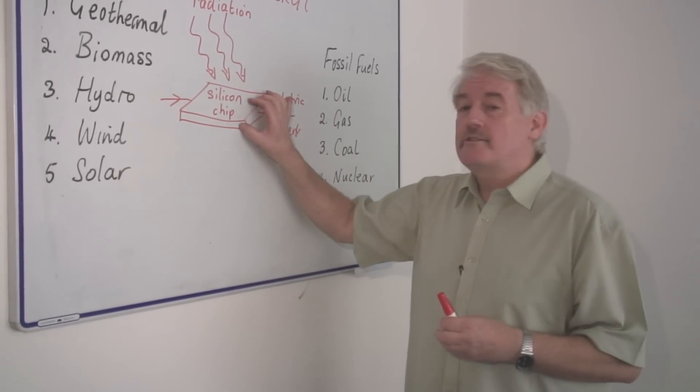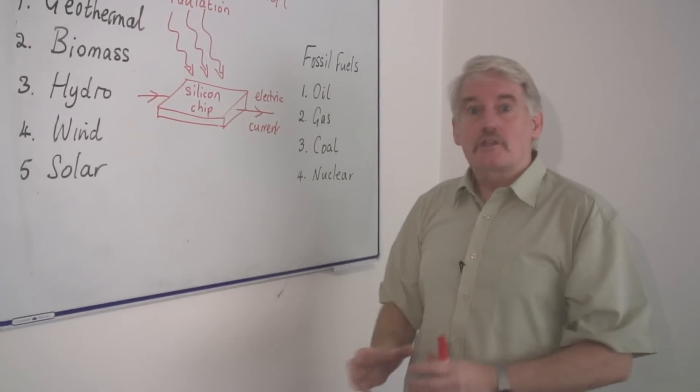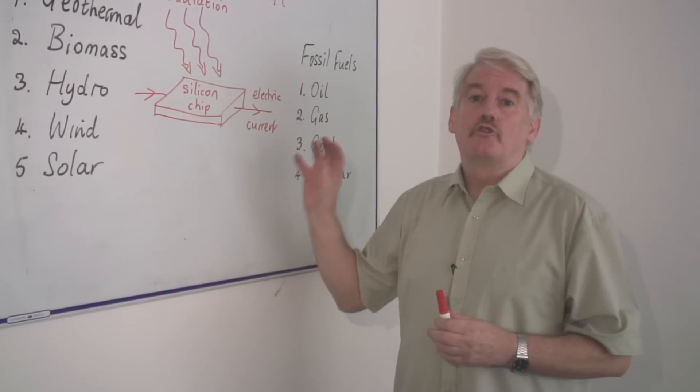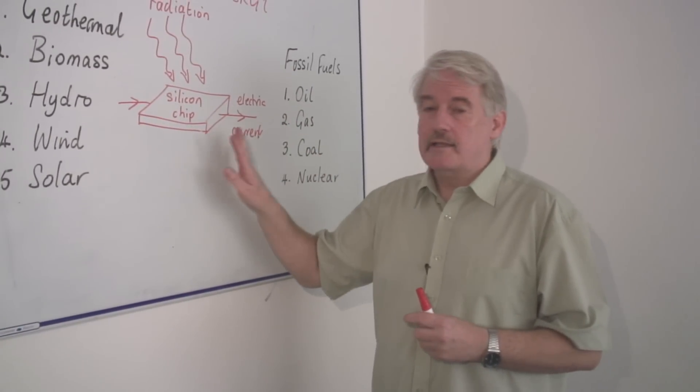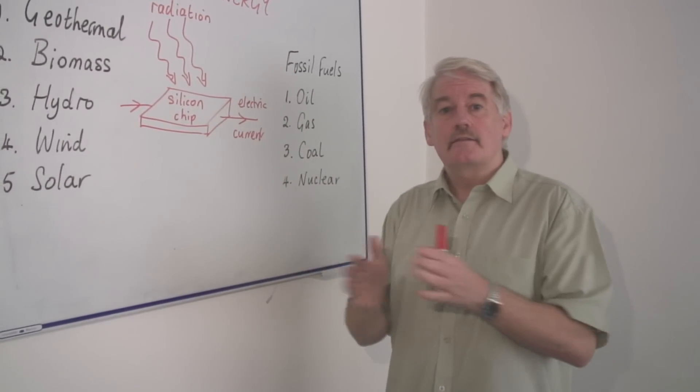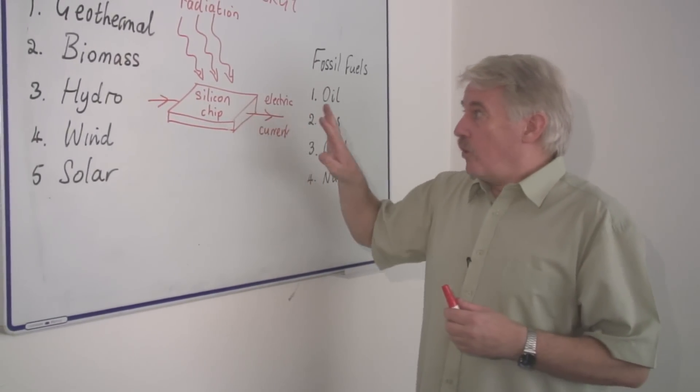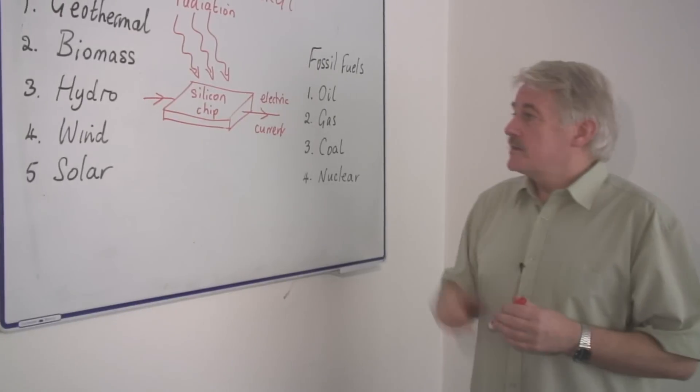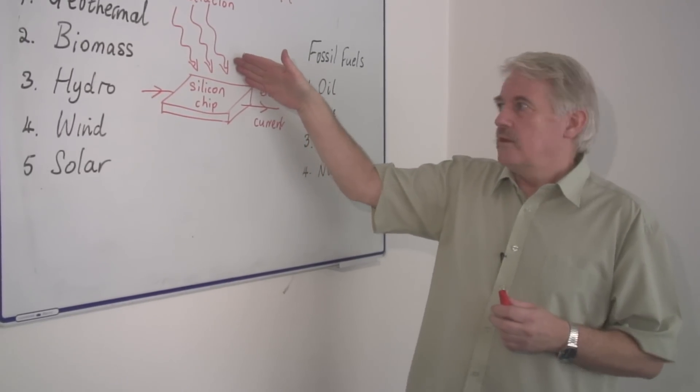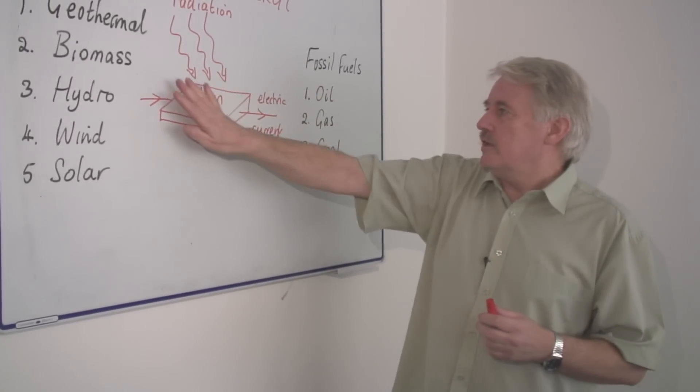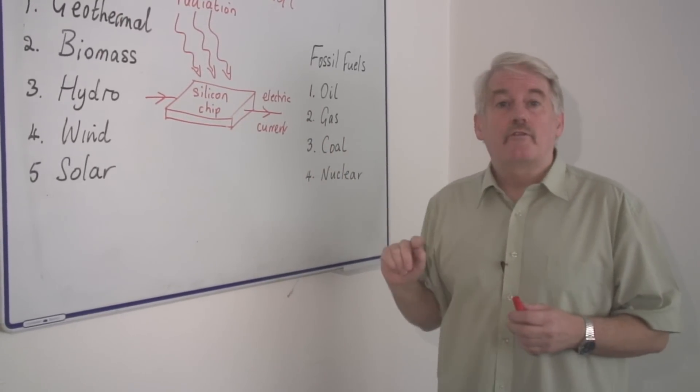The problem is to create this chip you need a pure crystal of silicon and this is very expensive to grow and then to cut. So silicon chips are quite expensive, particularly in the sizes that you need for a solar panel. And what we've got then is a process where radiation comes from the sun and it lands on the silicon chip and the result is a small electric current comes out of it.